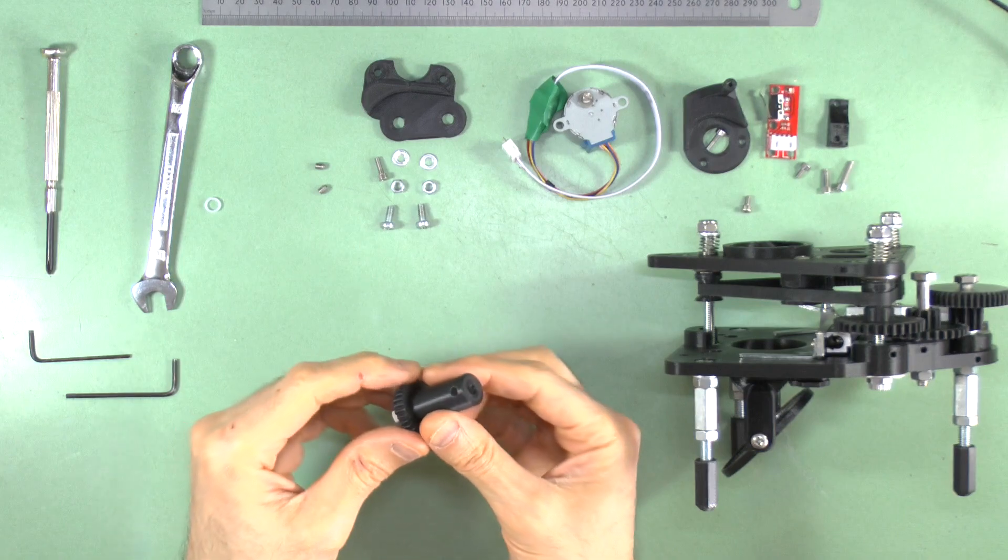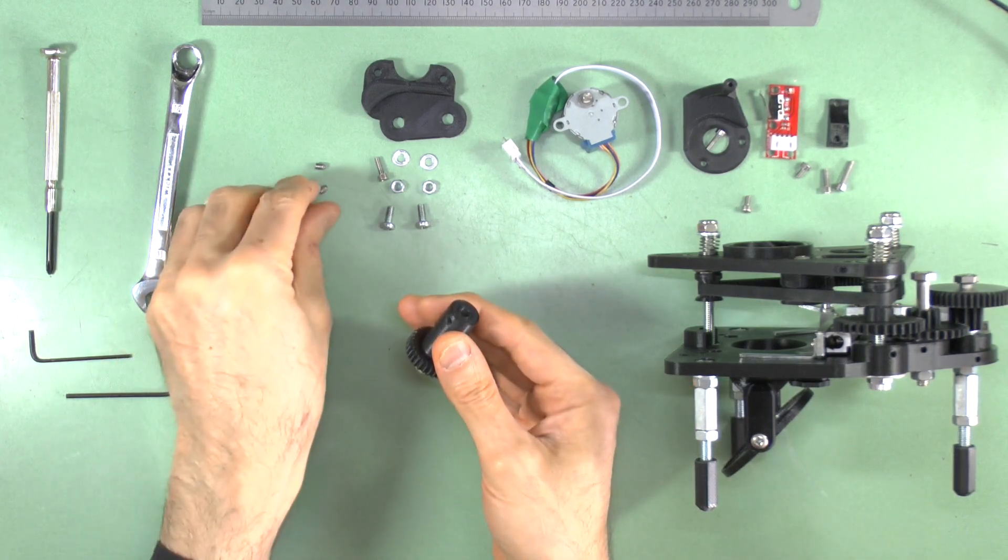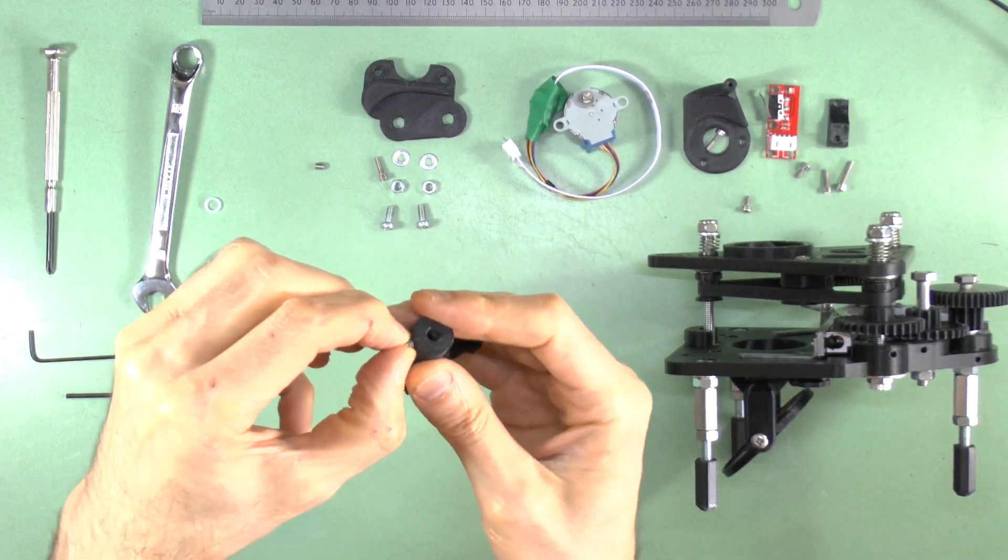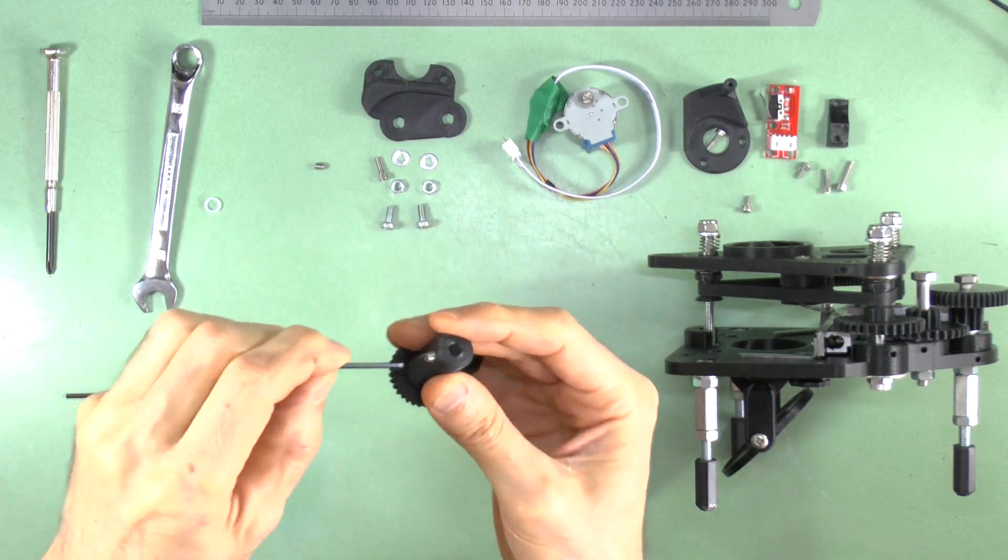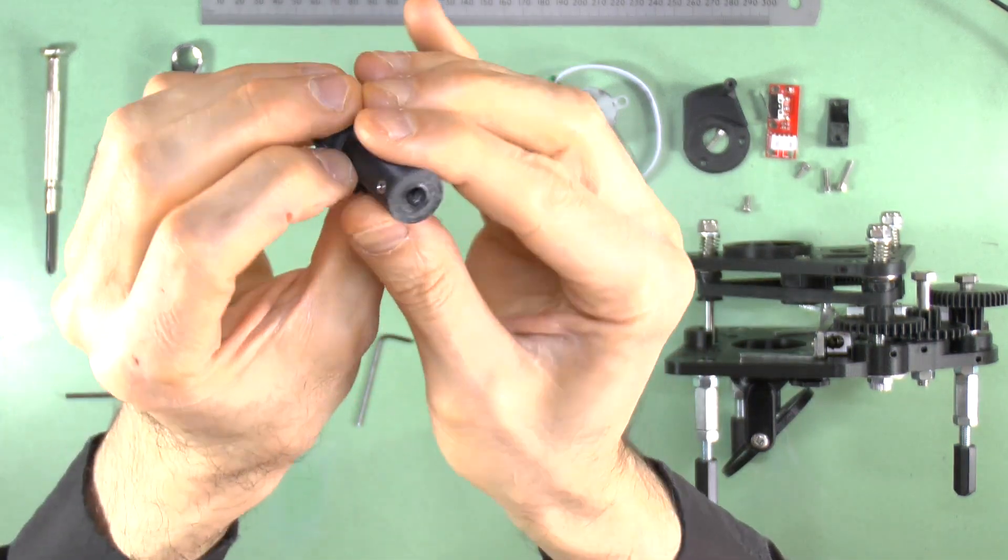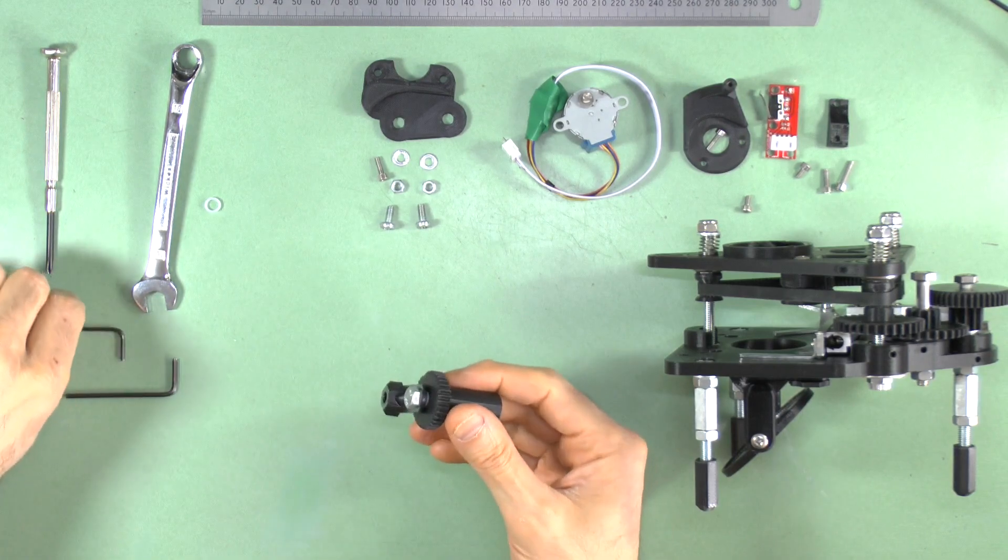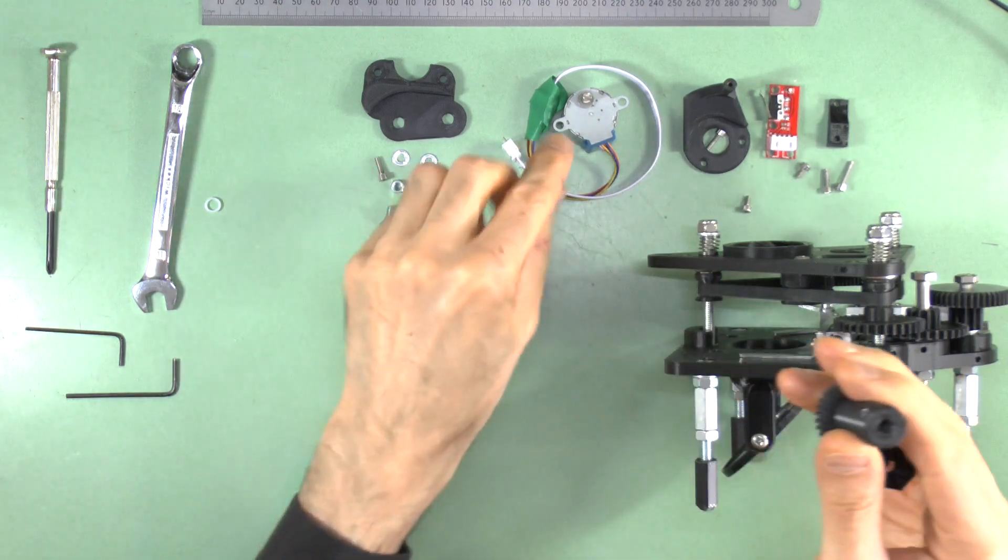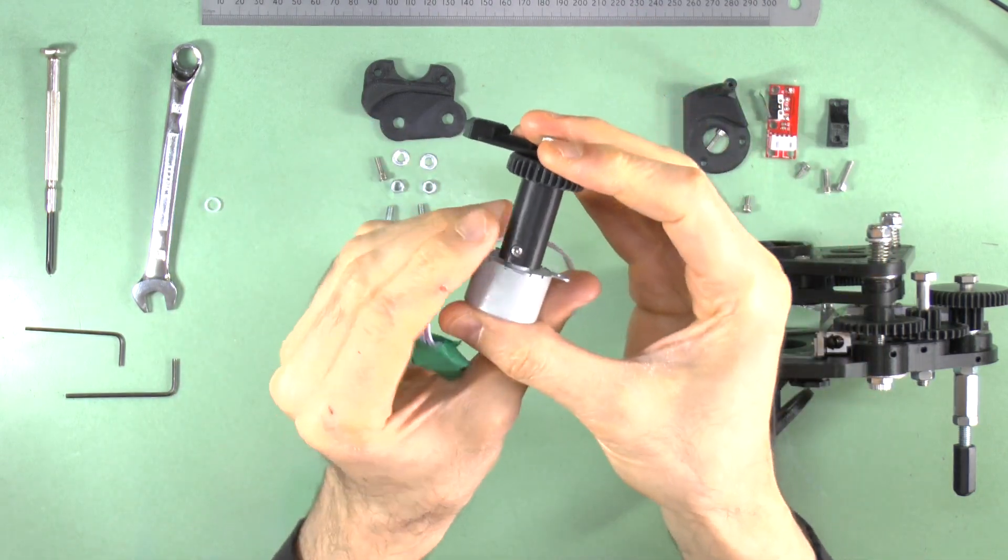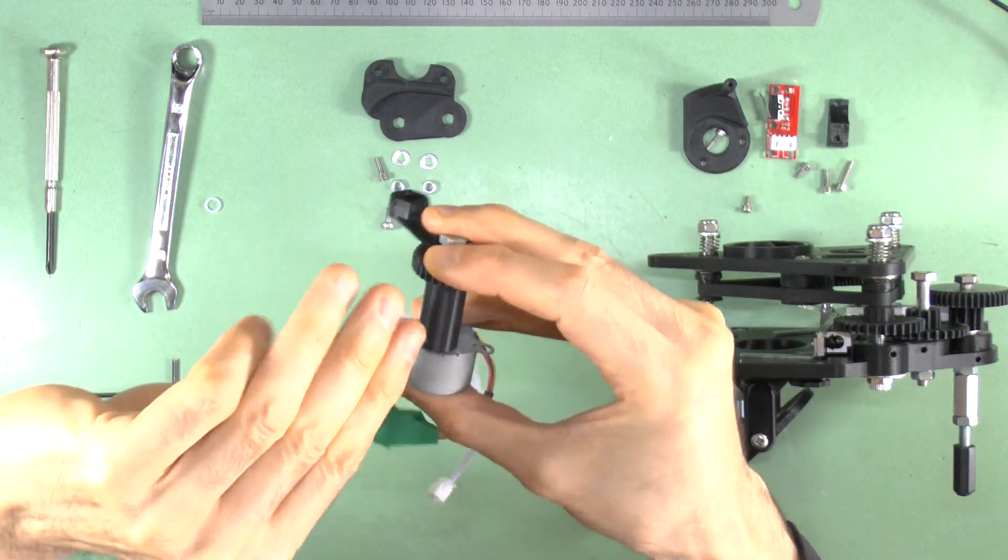Now insert the two M4 grub screws into their holes at the lower end of the assembly till they are flush with the outer surface. Make sure the flat edges of the hole in the gear shaft line up with the flat edges of the motor shaft and mount the gear onto the motor as far down as it will go. Then tighten the M4 grub screws till there is no play in the fit. Take care not to over tighten or you will destroy the plastic threads you have just cut into the gear shaft.